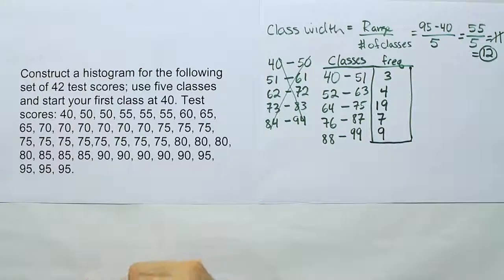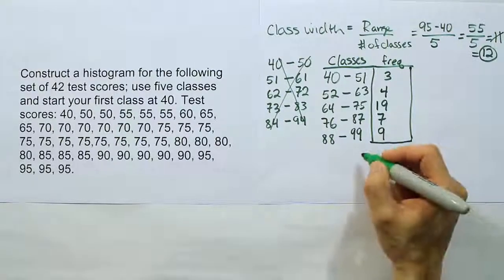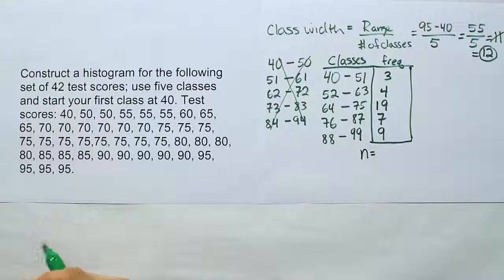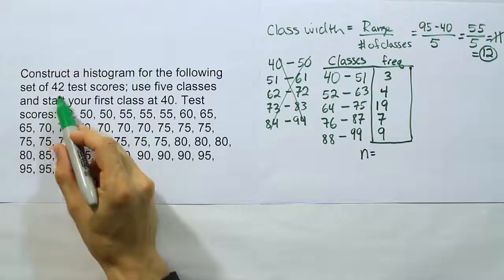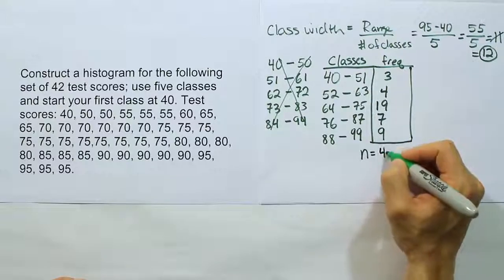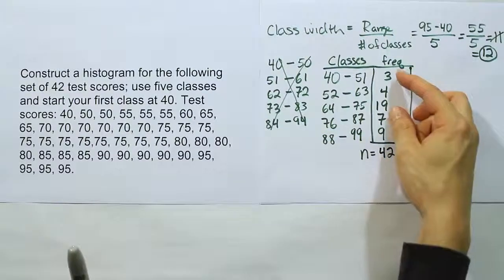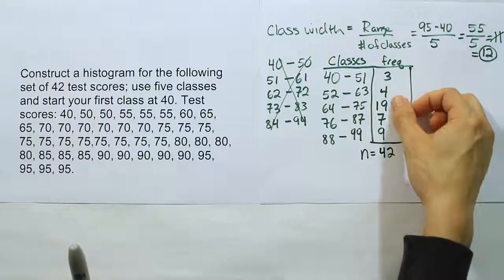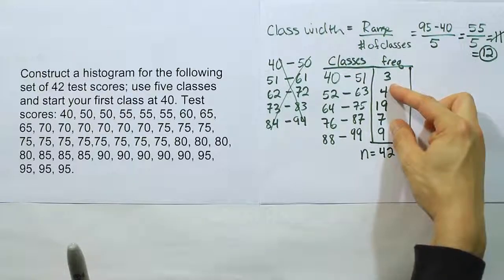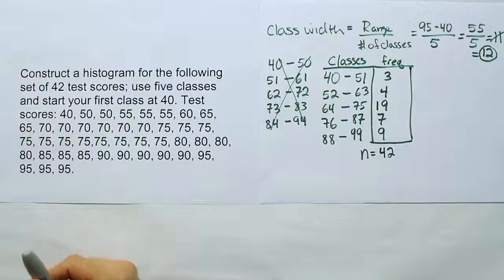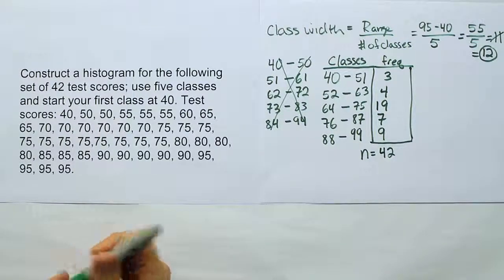From there, if we want to form the histogram, the next thing we ought to do is to come up with two extra columns. One of them will be called the class boundaries, and the other will be called the relative frequency. Let's get the relative frequencies first. The relative frequencies are pretty easy. We first have to total up this column here to figure out n, the total sample size in the problem. It should add up to 42 test scores. It adds up to 42 like it's supposed to.